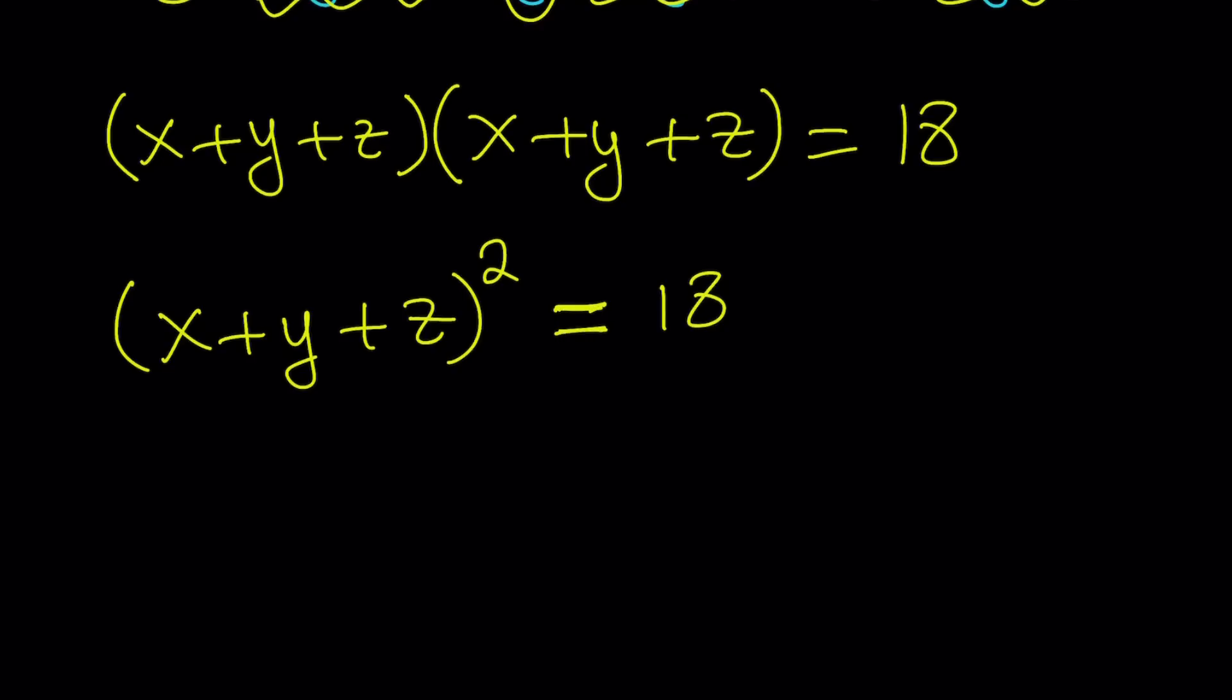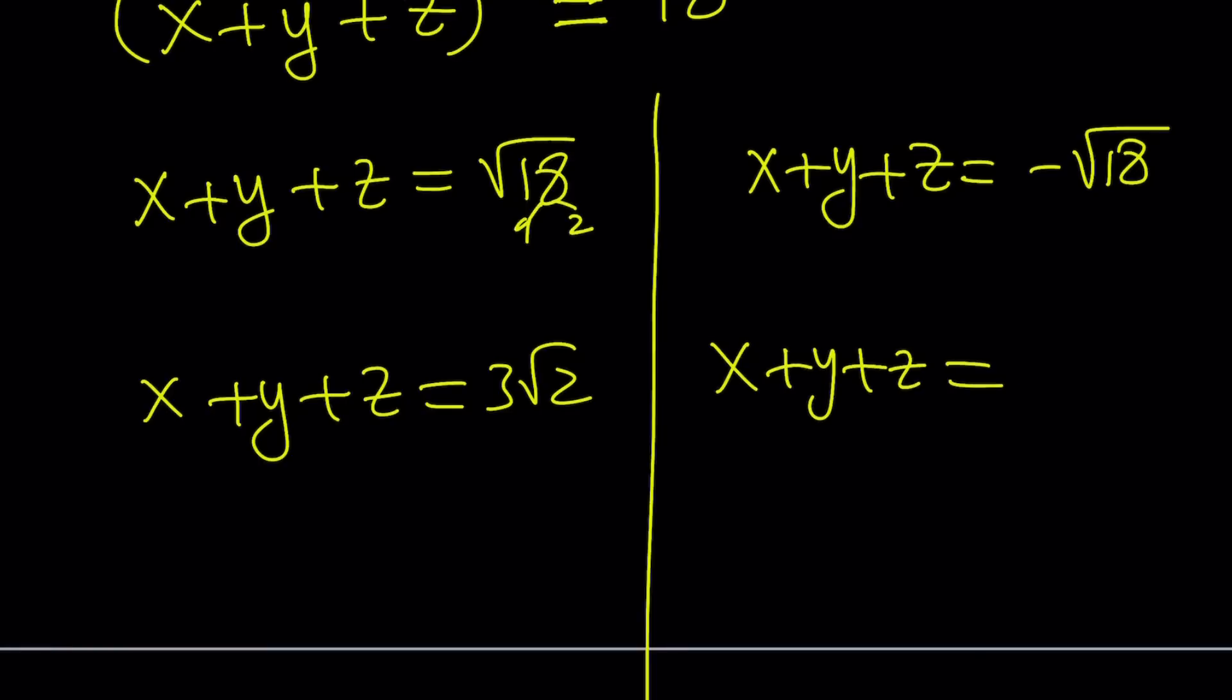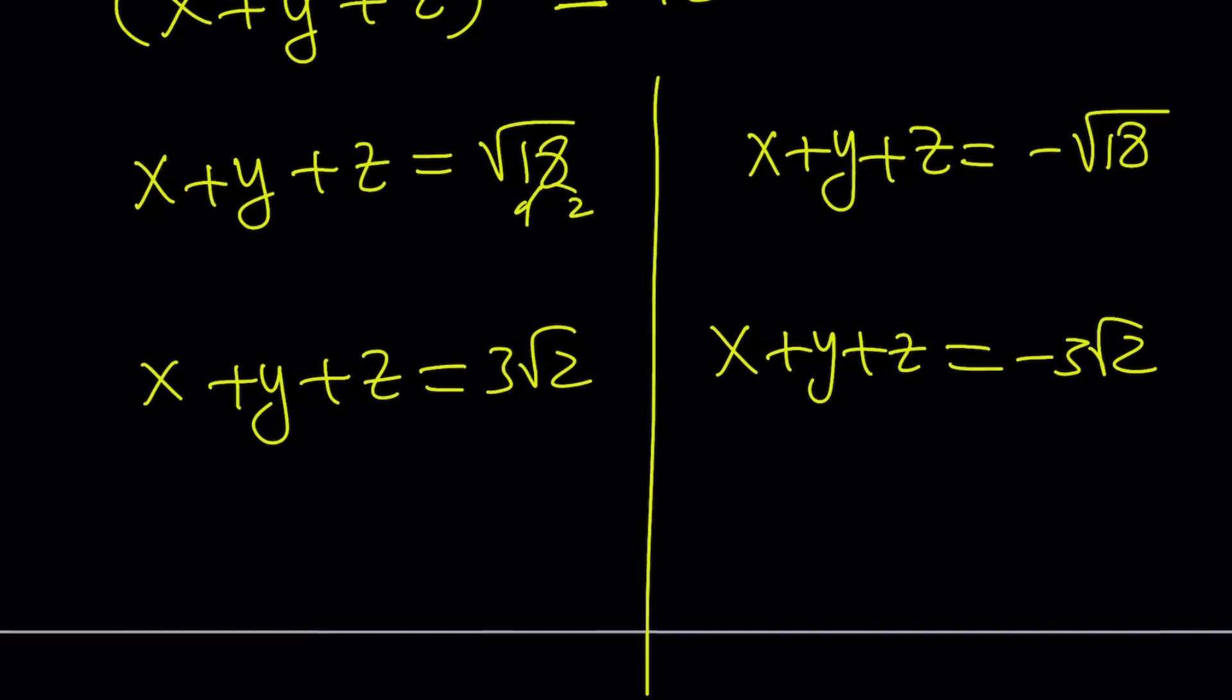So, you can take the square root of both sides, and you get square root of 18, or negative of that. And square root of 18 is basically 3 root 2. Let's go ahead and write it that way. x plus y plus z is 3 root 2, or x plus y plus z is negative 3 root 2. So, basically, whatever you do, it's just going to be negated, same thing, because if x is a solution, then negative x is also a solution. Make sense? You could also go off of that.